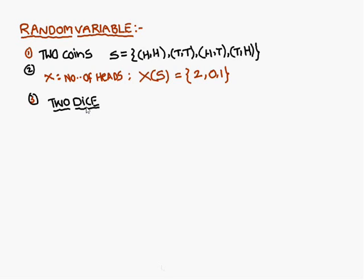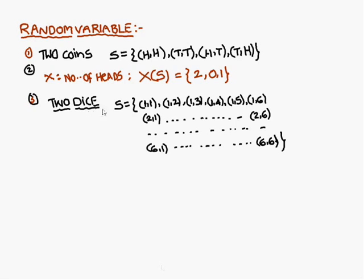I will give one more example to understand what is meant by random variable. When two dice are thrown, the sample space consists of 36 elements, starting with (1,1), (1,2), and so on, up to (6,6). Now I am going to define the random variable x as the maximum of the ordered pair (a,b). Here, unlike the previous example where x was defined as the number of heads, here x is the maximum of the ordered pair. x of s is the sample space.